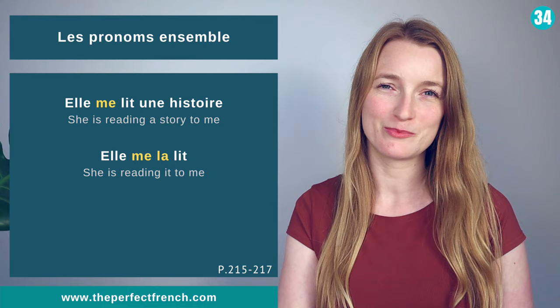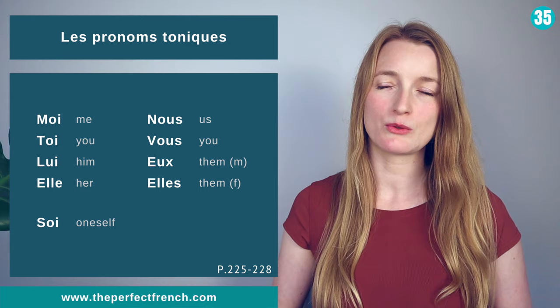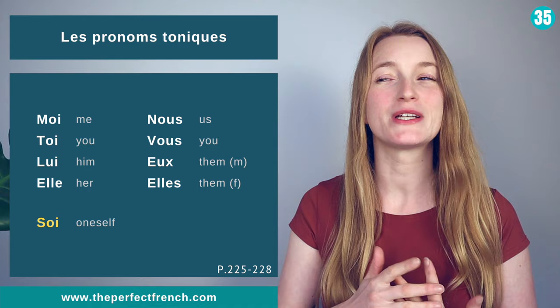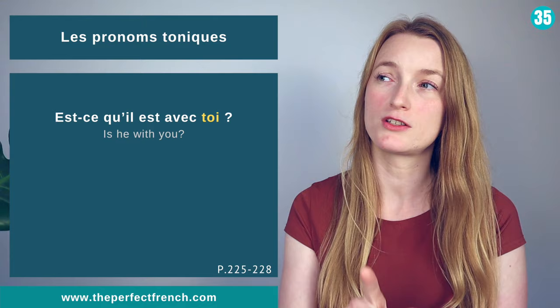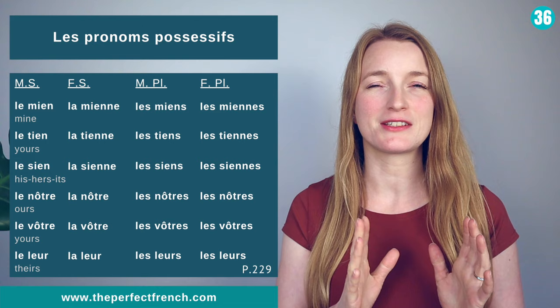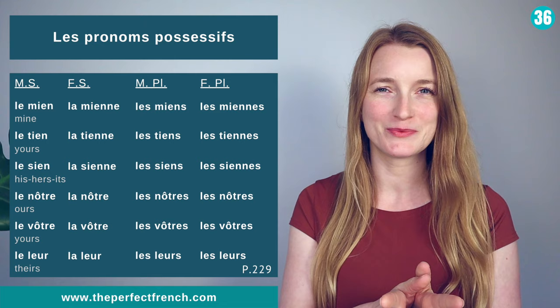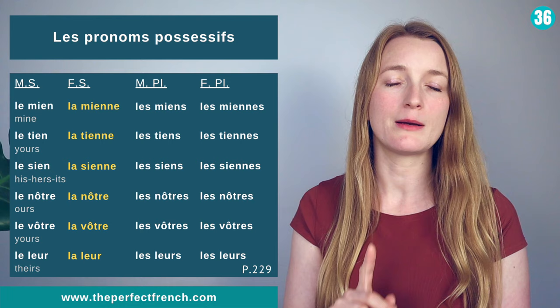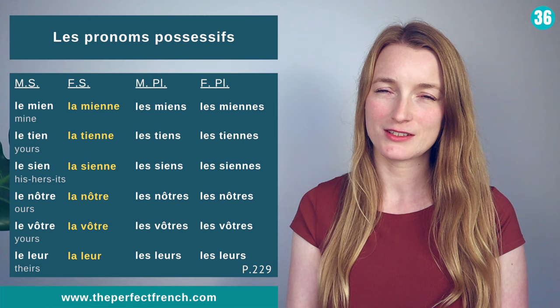Les pronoms toniques: moi, toi, lui, elle, nous, vous, eux, elles, and soi. Est-ce qu'il est avec toi? C'est pour elle.